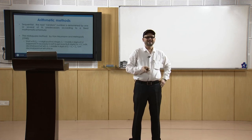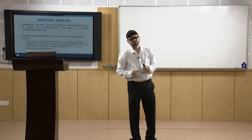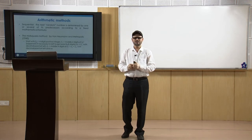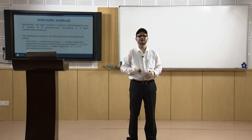As shown, z₀ is a 4-digit integer; z₁ is the middle 4 digits of z₀ squared (which has 8 digits). Then u₁ equals z₁ with a decimal point at the left, giving a random number between 0 and 1. This way you get u₁, u₂, u₃, and so on as random variates.